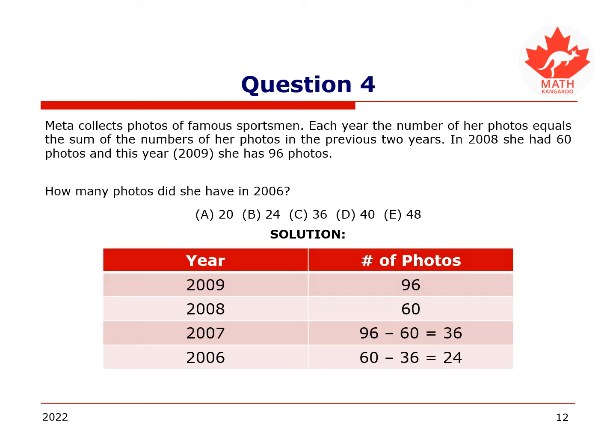Here is the solution. Each year, the number of Meta's photos equals the sum of the numbers of her photos in the previous two years. It is given that in 2008 she had 60 photos, and in 2009 she had 96 photos. We will work backwards to find the number of photos she had in 2006. Photos in 2009 equals photos in 2008 plus photos in 2007. Then, 96 equals 60 plus photos in 2007. Therefore, in 2007 we have 96 minus 60 equals 36 photos.